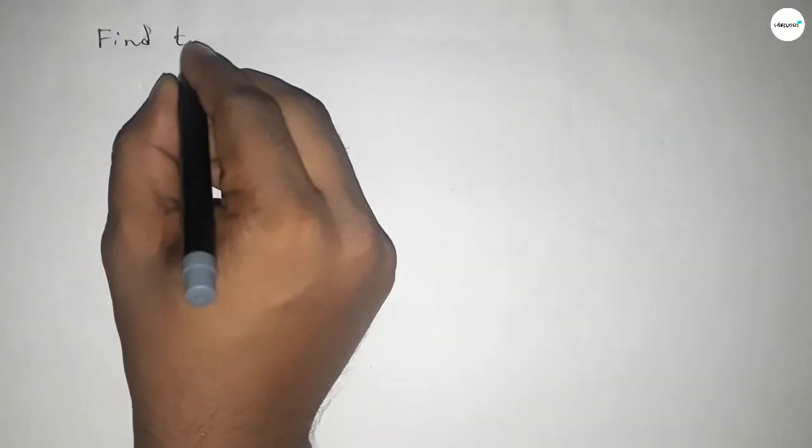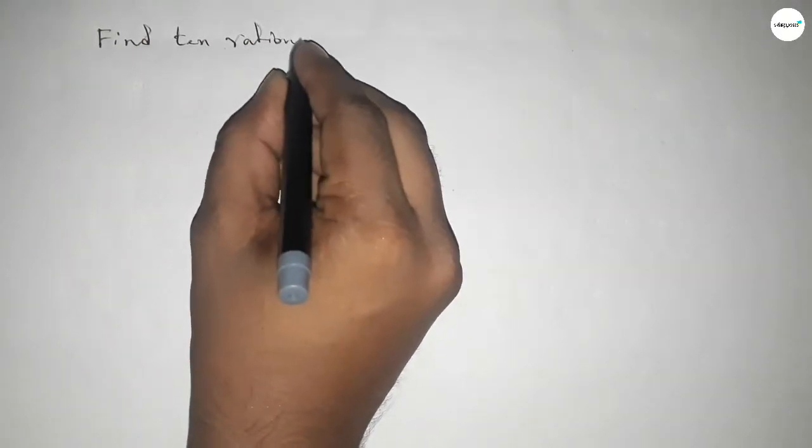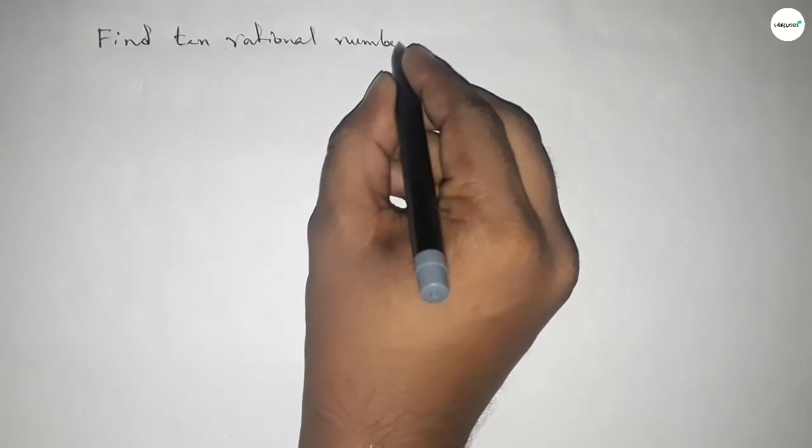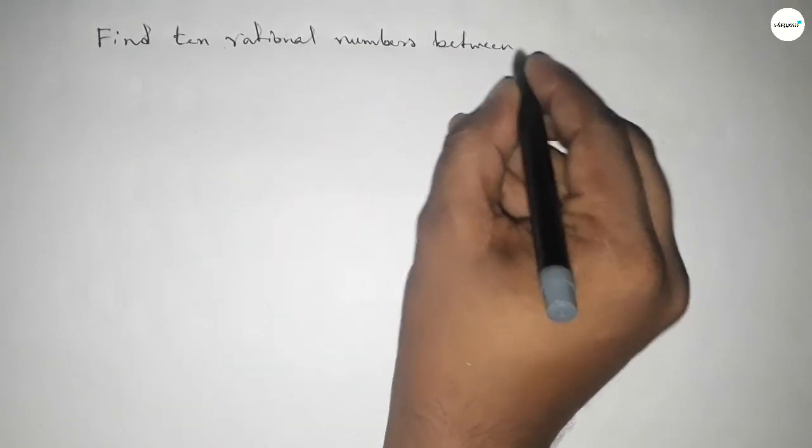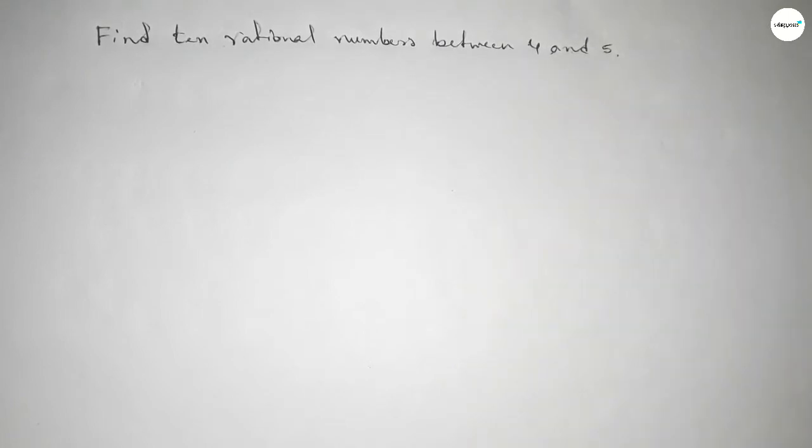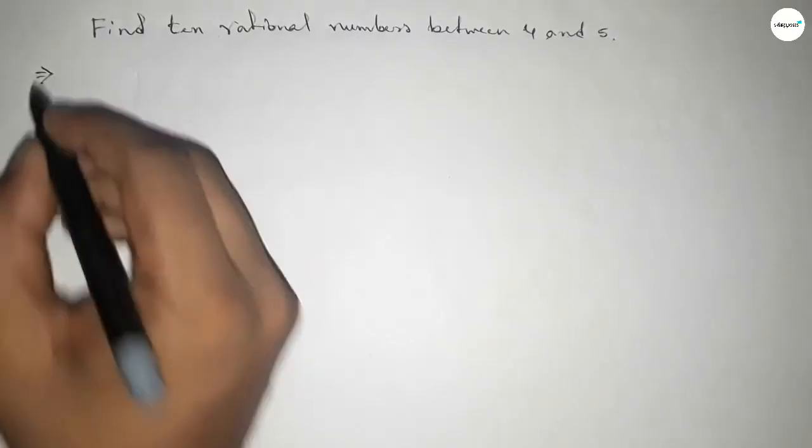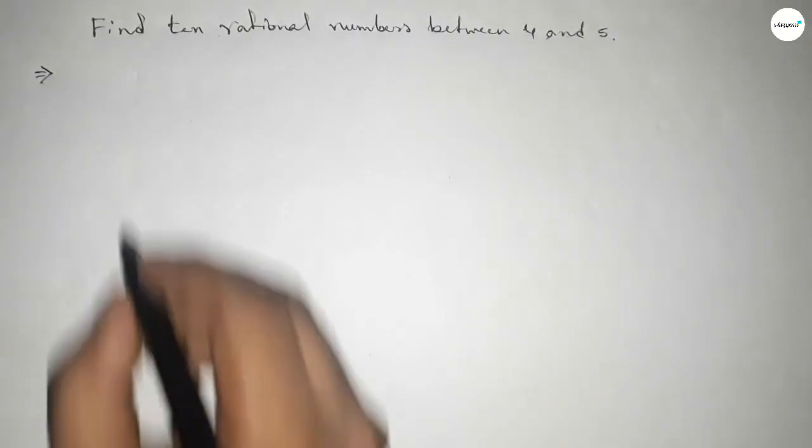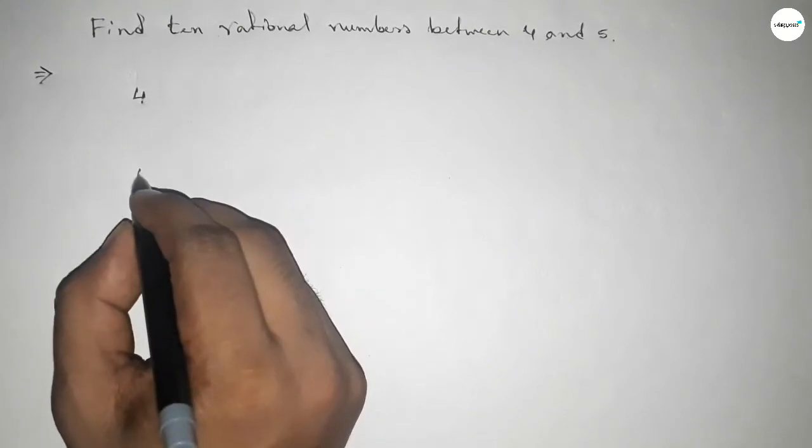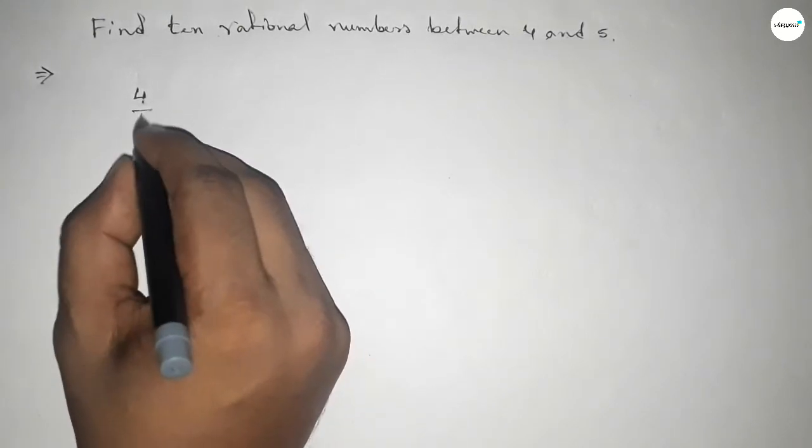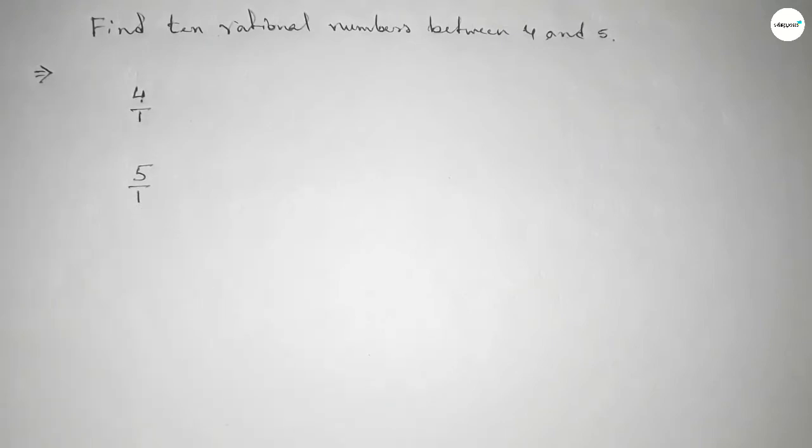Hi everyone, welcome to Assessor Classes. Today in this video we have to find 10 rational numbers between 4 and 5. So finding 10 rational numbers between 4 and 5, let's start. First of all, write down here the given numbers 4 and 5. Now we can write 4 as 4 over 1 and 5 as 5 over 1.